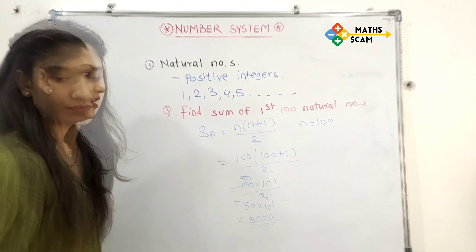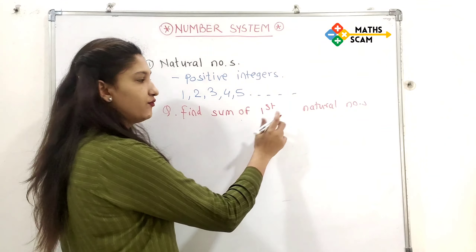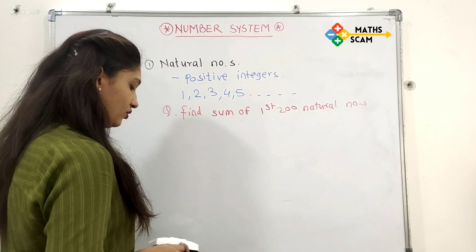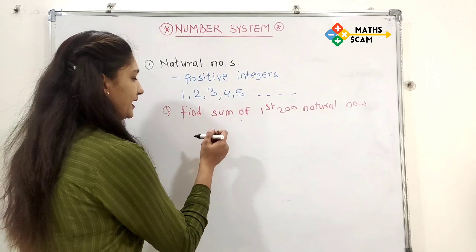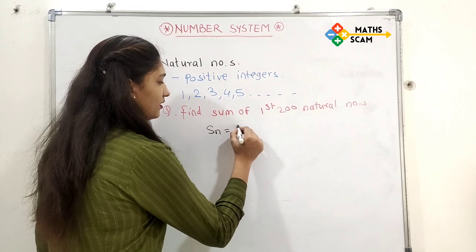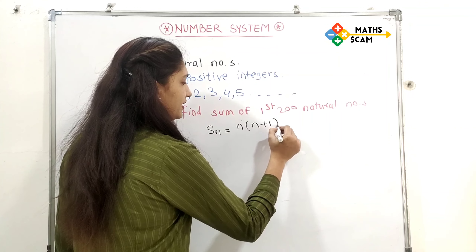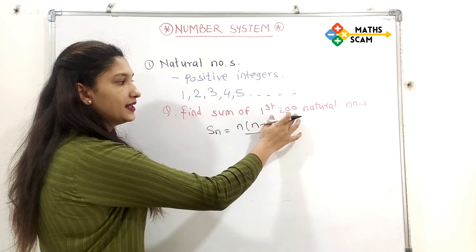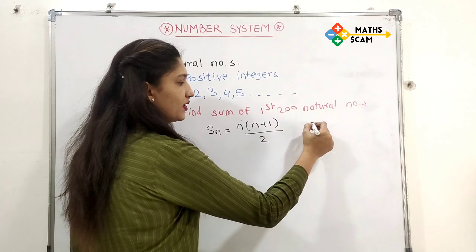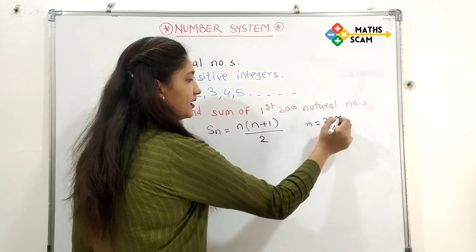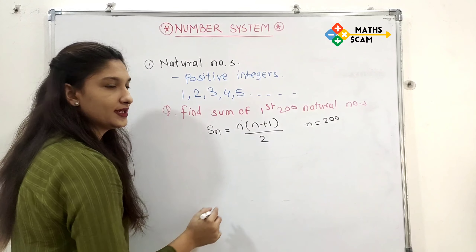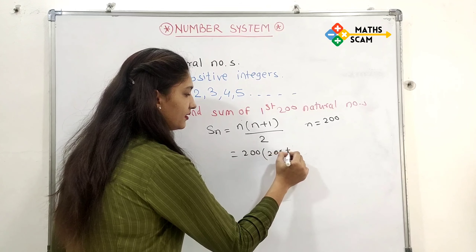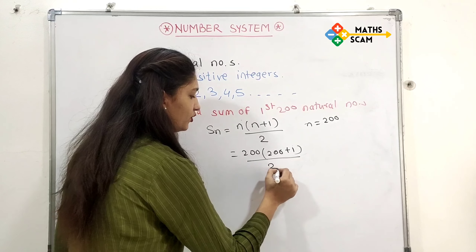Next problem: if you want to find the sum of the first 200 natural numbers, we use the formula Sn = n(n+1)/2. Here n equals 200, so we put 200 into the formula: 200 into (200 plus 1) divided by 2.